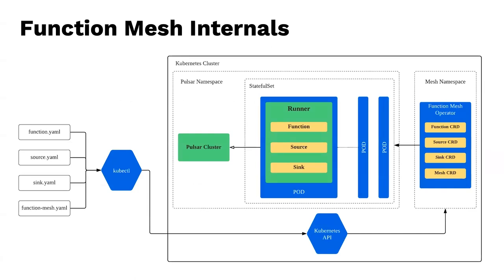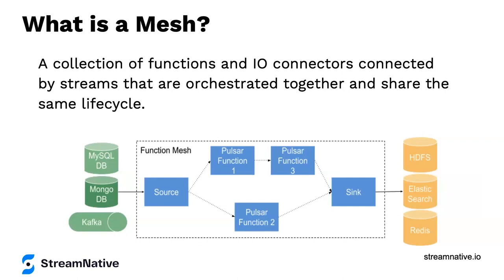Function Mesh consists of two components: the Kubernetes operator, which watches Function Mesh CRDs and creates Kubernetes resources like StatefulSets to run functions; and the function runner, which invokes function and connector logic when receiving events from input streams. The runner supports Java, Python, and Go. Logically, you can have a source connector feeding data through a chain of Pulsar functions, joining results together into a sink — one of many EDA pipeline use cases.